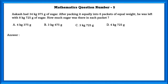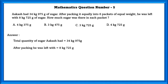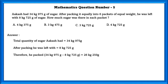Mathematics question number 5. Akash had 34 kgs 975 grams of sugar. After packing it equally into 6 packets of equal weight, he was left with 8 kgs 725 grams of sugar. How much sugar was there in each packet? Total quantity of sugar Akash had is 34 kgs 975 grams. After packing, he was left with 8 kgs 725 grams. Therefore, he packed 26 kgs 250 grams.